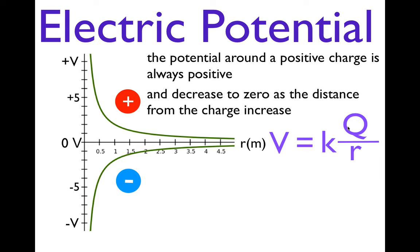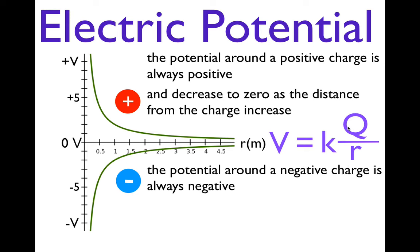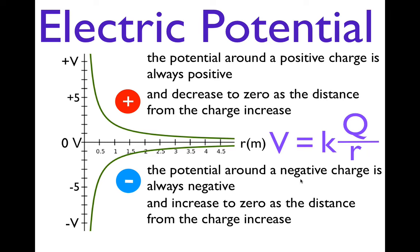If we have a negative charge, the potential around it is always negative. As you move away from the negative charge, the potential actually increases — going from, say, minus 10 to minus 5 to minus 1 as the distance grows. Those numbers, although negative, are getting bigger, and the potential increases toward zero as the distance increases. We'll go over that in more detail when we talk about electric potential difference in the next video.